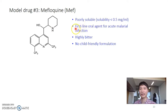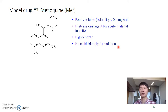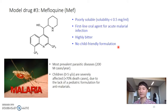Mefloquine is a first-line oral agent for acute malaria infection. However, it's highly bitter and there is no child-friendly formulation. The real limitations are that it's not water-soluble and it's highly bitter, making it very difficult to produce a child-friendly formulation, which causes a lot of problems in Africa.